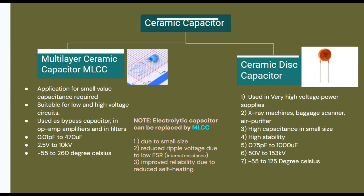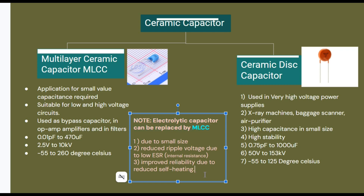We note here that electrolytic capacitors can be replaced by multilayer ceramic capacitors — first, due to their small size; second, they have reduced ripple voltage due to low ESR, meaning lower internal resistance; and third, improved reliability due to reduced self-heating.